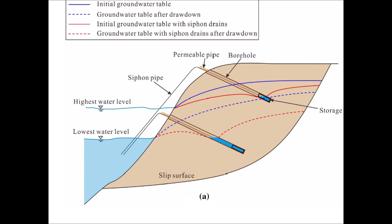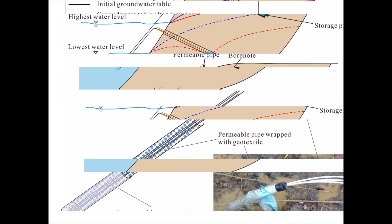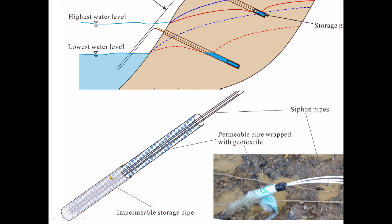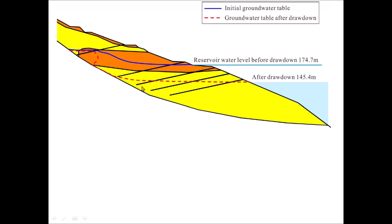There is a pressure difference and potential head difference, and automatically this height difference drives the siphon tube. The siphon tube is drilled in a 10 cm borehole with a PVC pipe; there is a lower storage portion and an upper portion. The first part of the siphon tube assembly is a perforated pipe wrapped in geotextile fabric to prevent sediment entry. This setup stabilizes the slope.